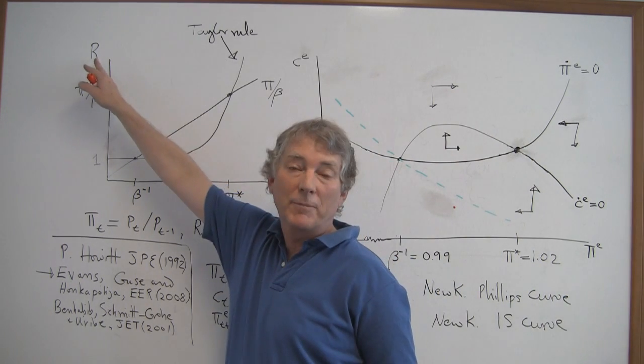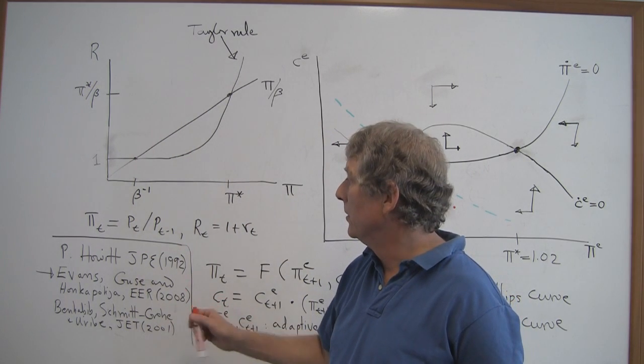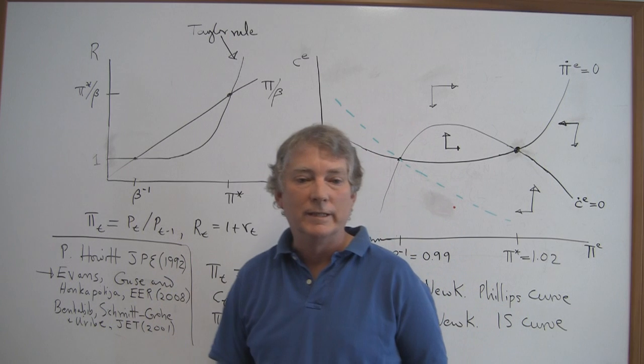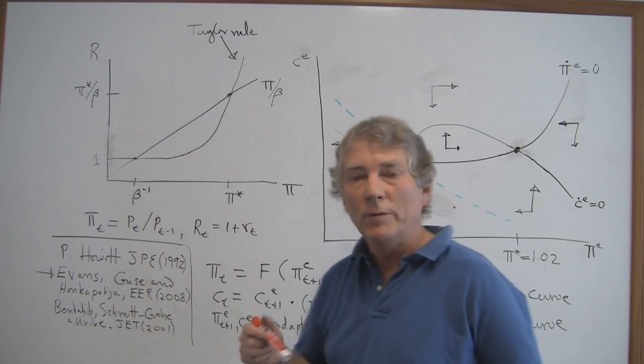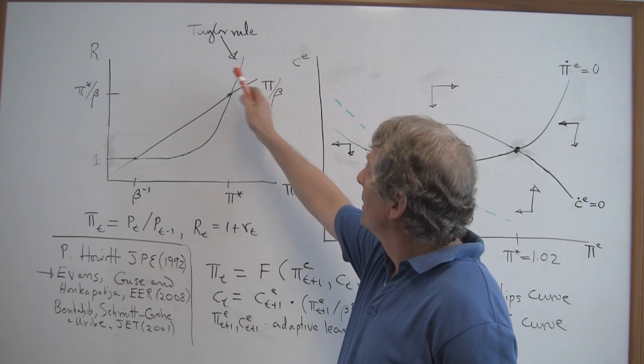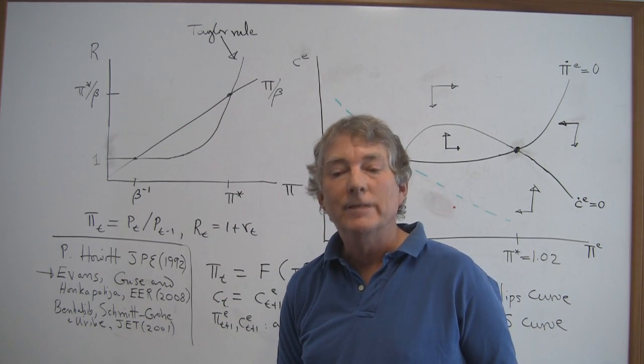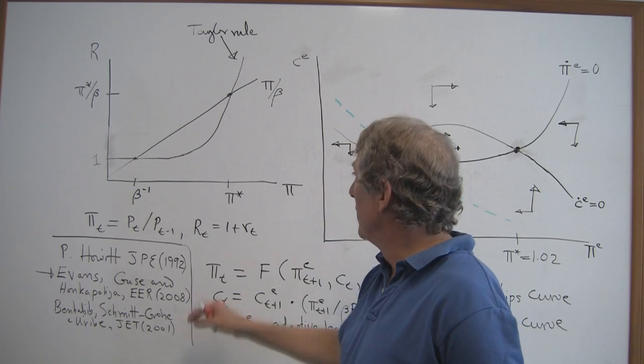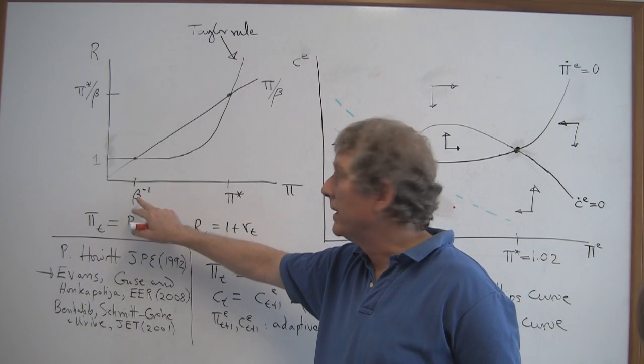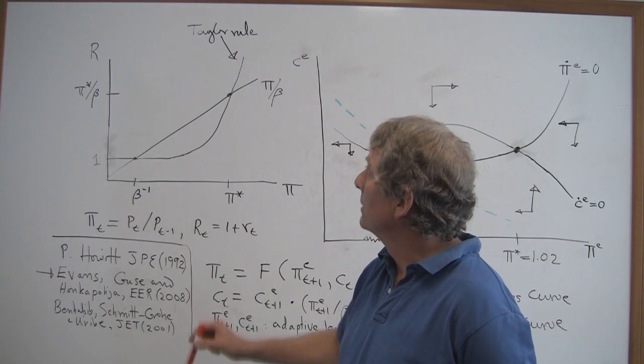And the Fisher relation, here R, capital R, is the interest rate factor. So an R of 1.01 means a 1% net interest rate. And the Fisher relationship is R equals pi over beta, where beta is the discount factor. That might be, say, 0.99, in which case beta inverse is 1.01, approximately.